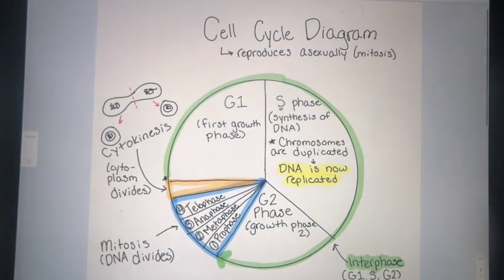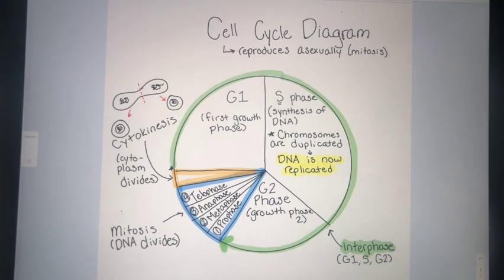Putting all of that together gives us one cell cycle diagram that shows the life cycle of a cell that reproduces asexually through mitosis.